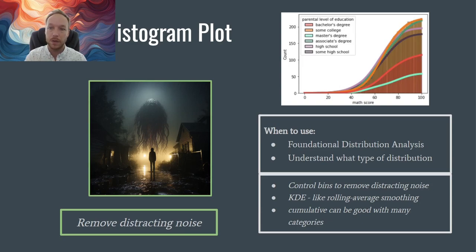...is by using the KDE version of this, adding the KDE line - the kernel density estimation line - the outline of the distribution. And this gives you a better sense of really how the different categories, the distributions, are flowing together and give you that sense of those as well.